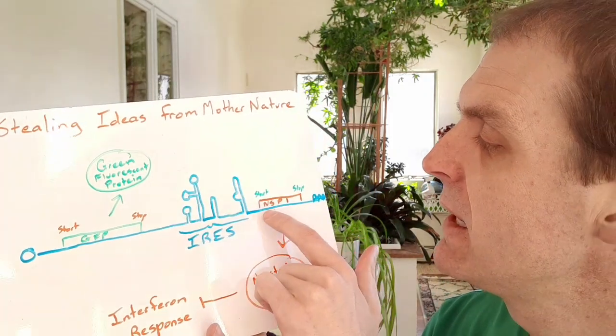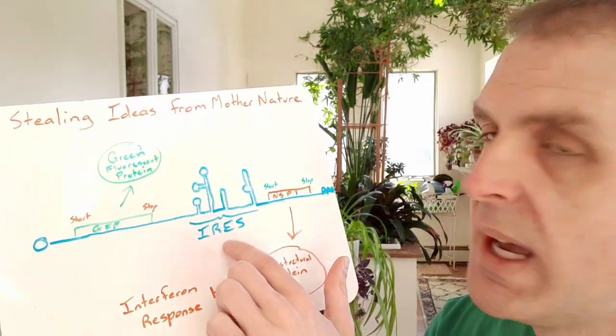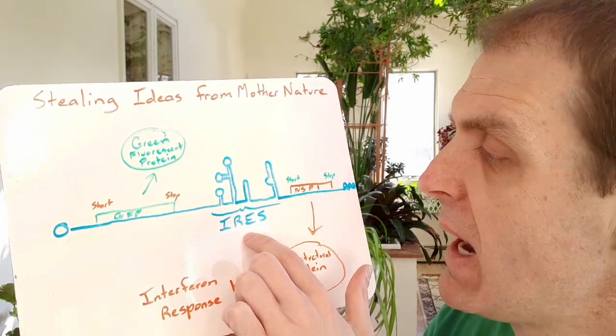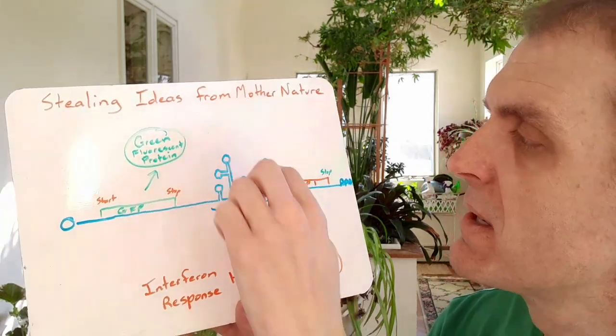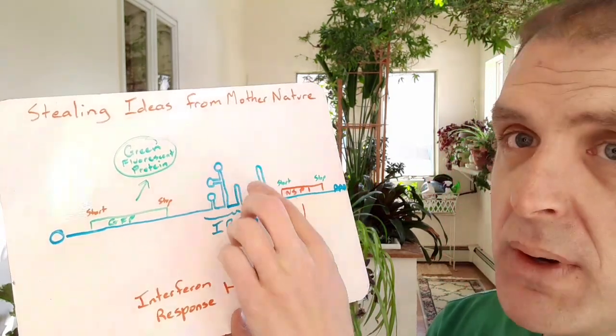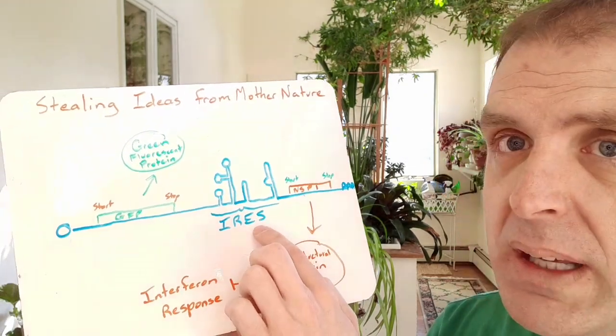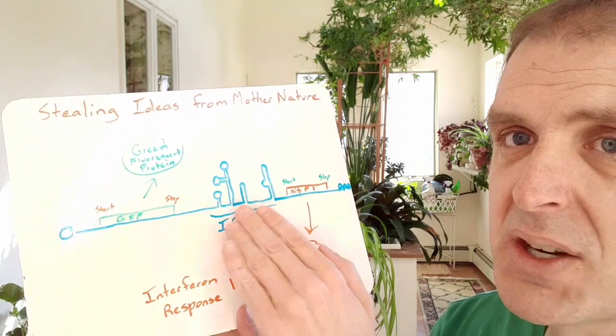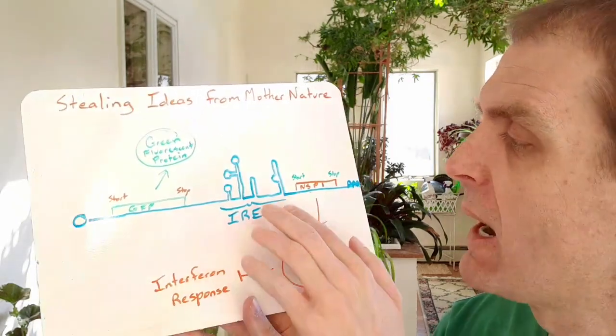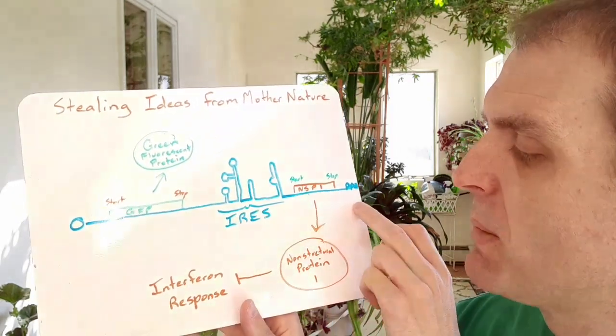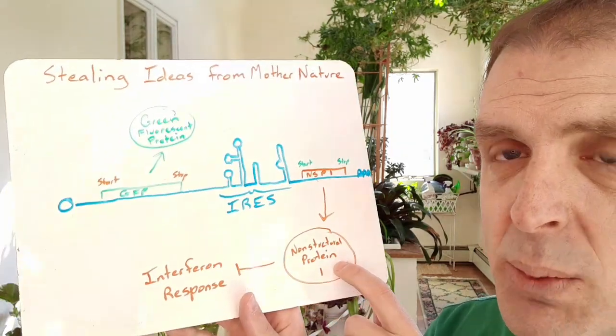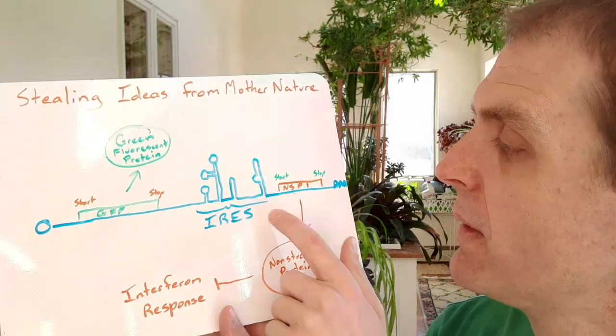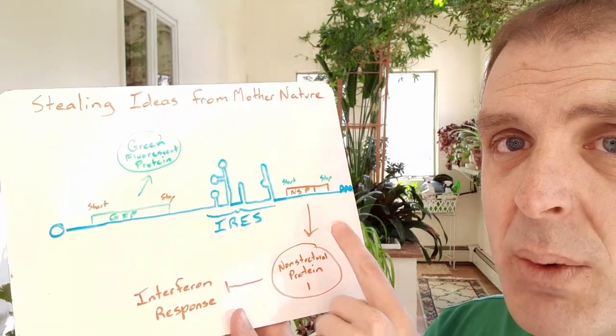It has its own start and stop and in front of it we've got an IRES and so the translation machinery can be recruited independently internally to this so that you can get translation that's independent of that cap. Get NSP1 being made and here's the NSP1 protein being made.